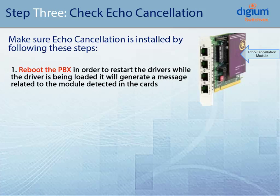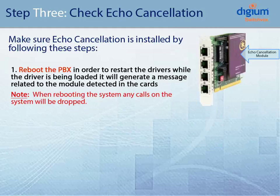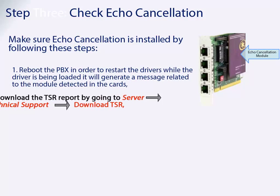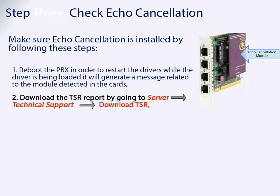The first thing you need to do is reboot the PBX in order to restart the drivers. While the driver is being reloaded, it will generate a message related to the module detected in the card. Keep in mind, when rebooting the system, any calls on the system will be dropped. Next, you will need to download the TSR report. You can do this by clicking on Server, then Technical Support, and then click on Download TSR.